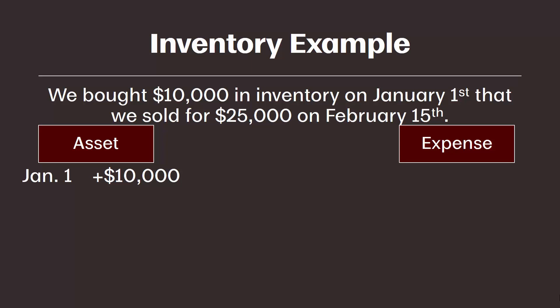On January 1st we would need to add ten thousand dollars to inventory, which increases our assets. We would also decrease assets by ten thousand dollars for the cash paid for that inventory, but we won't focus on that right now. The key point is that our accounting equation must balance — assets equal liabilities plus stockholders' equity. Inventory is an asset up front because we're going to use it in the future to generate an economic benefit, meaning we will sell the inventory and eventually receive cash.